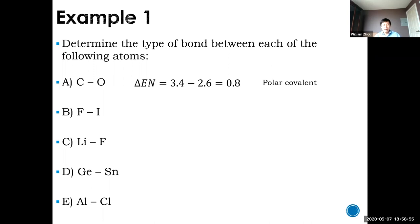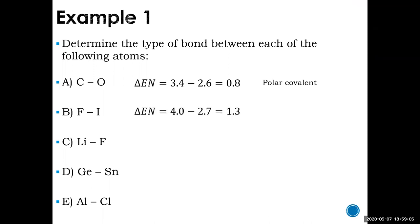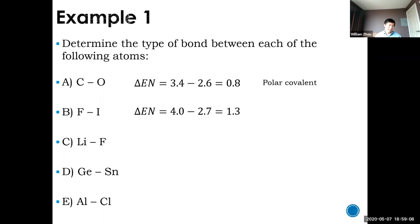For fluorine and iodine: fluorine is 4.0 and iodine is about 2.7 — the difference is 1.3. So this is again polar covalent. You can see how this works — just look up the values on the periodic table and subtract.